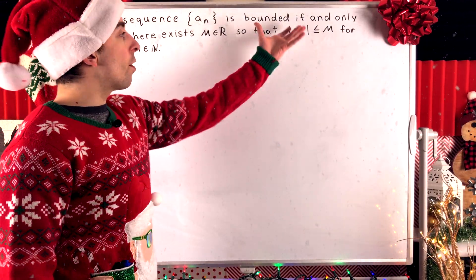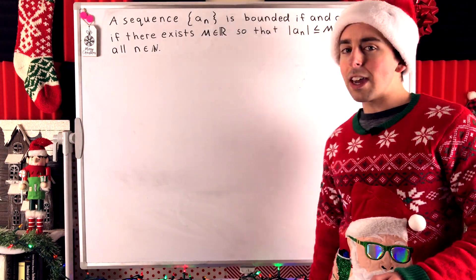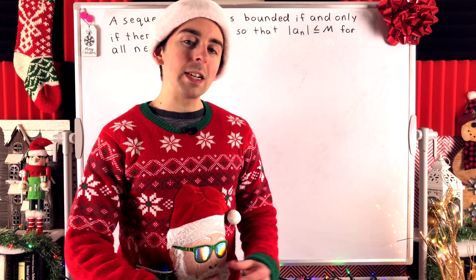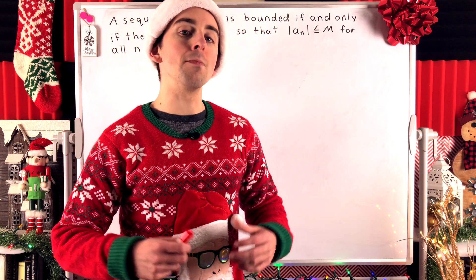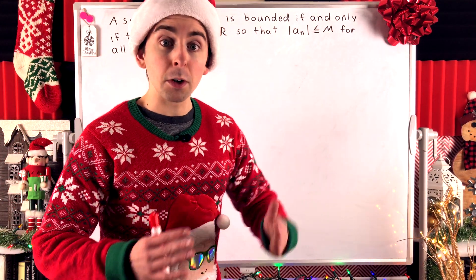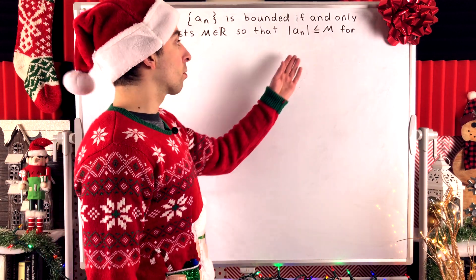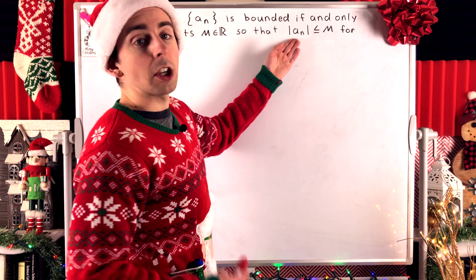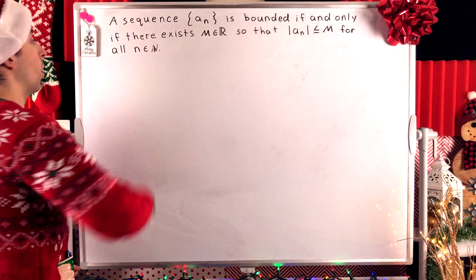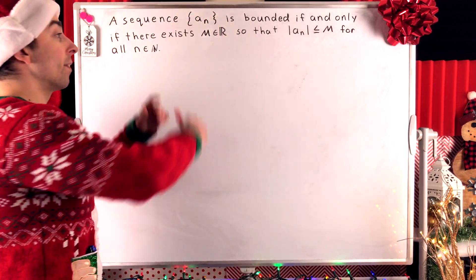A sequence aₙ is bounded if and only if there exists some real number that's greater than or equal to the absolute value of every term in the sequence. That's what we'll be proving in today's Wrath of Math lesson. If you need a recap on bounded sequences, I'll leave a link in the description to my lesson on the topic.